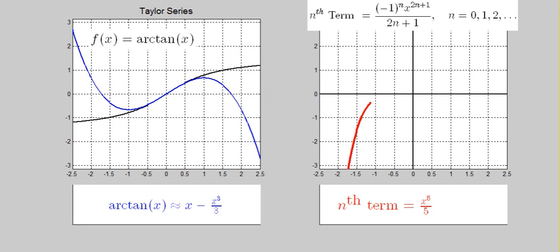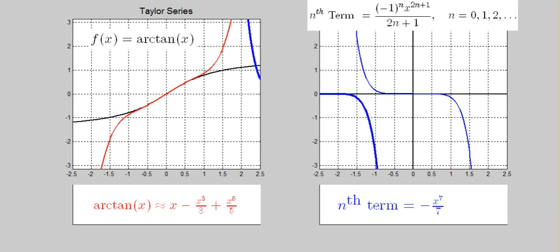It is no coincidence that the only non-zero terms are odd powers of x. That is, since the arctan is also an odd function, its power series representation consists of odd powers of x.